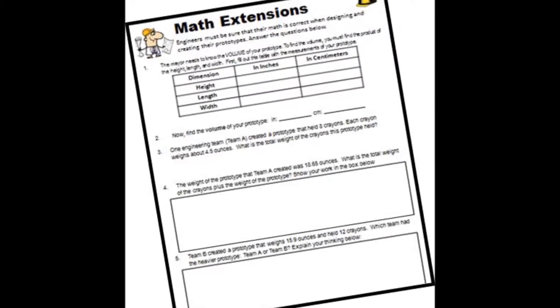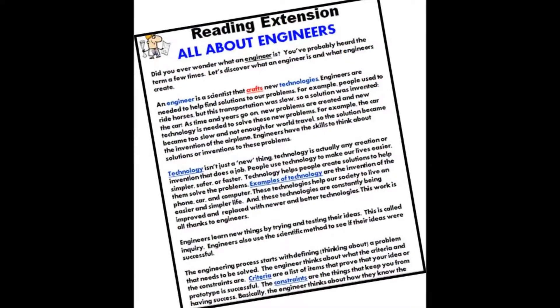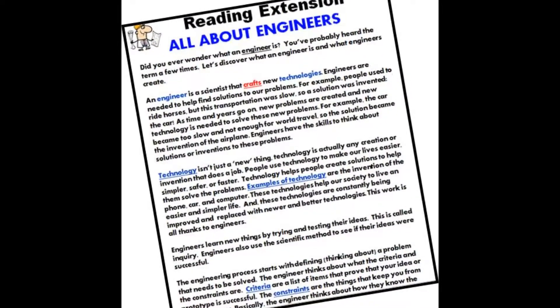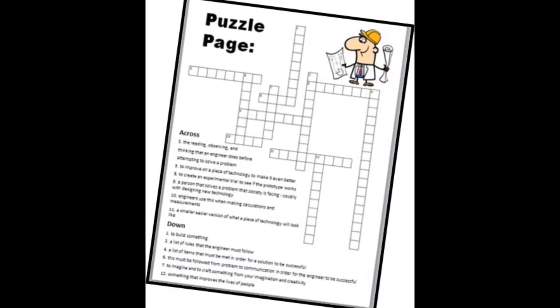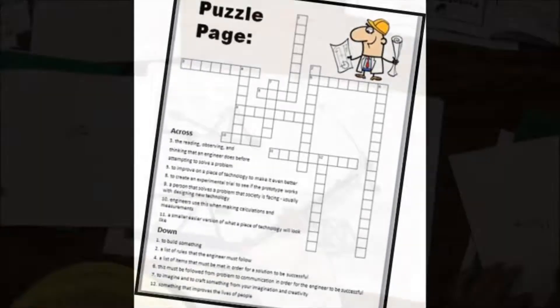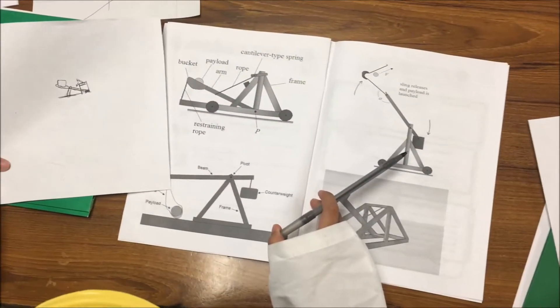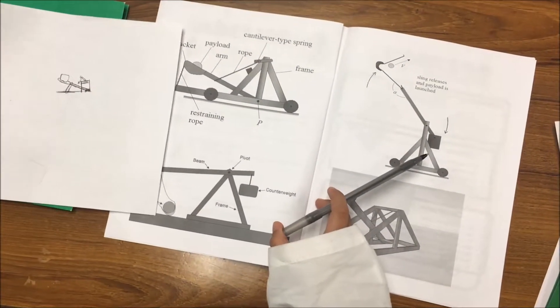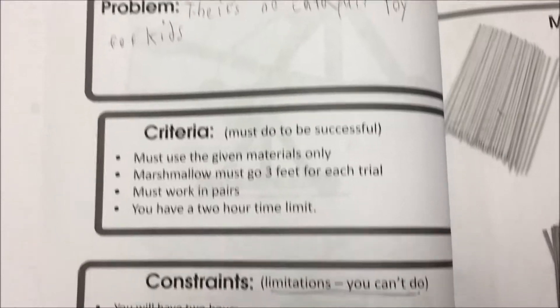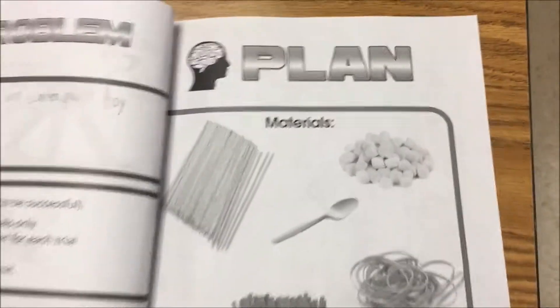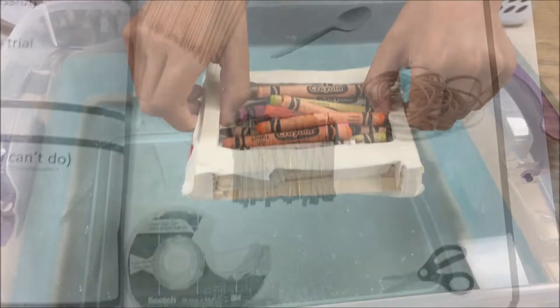It also allows seven opportunities for extension projects. You can blend this topic into ELA, into your math block, or send these home or find other times of the day or week to use these extension activities. In total, each activity in the STEM project lasted about eight to nine hours, so by doing all three, you have three weeks worth of content right there.